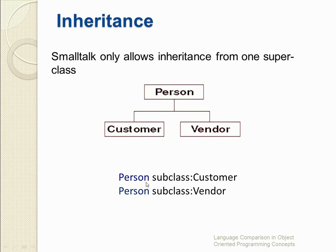This is the coding example of it. Person is our superclass, subclass is the keyword, and Customer is our class — which is the subclass name. The second one is also inherited from the Person class. So you can see Person is the superclass, subclass is the keyword, and Vendor is the subclass name.